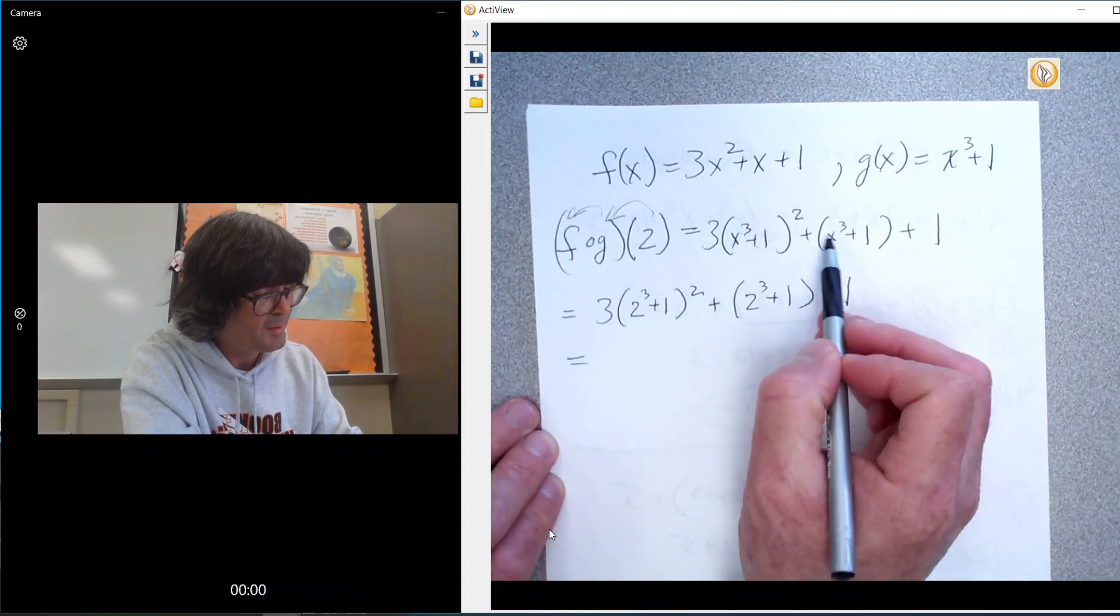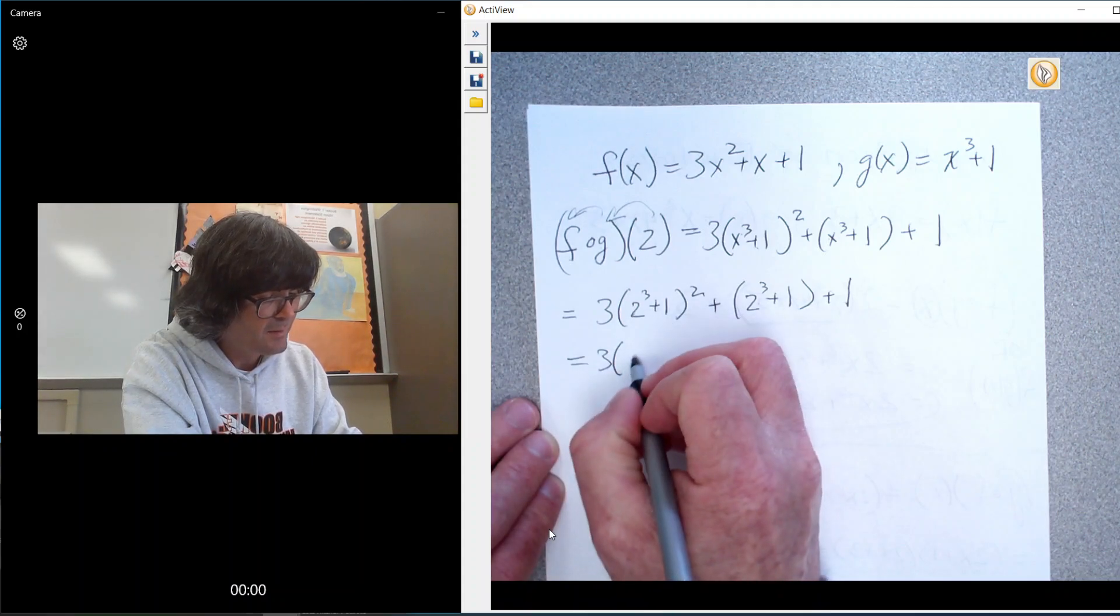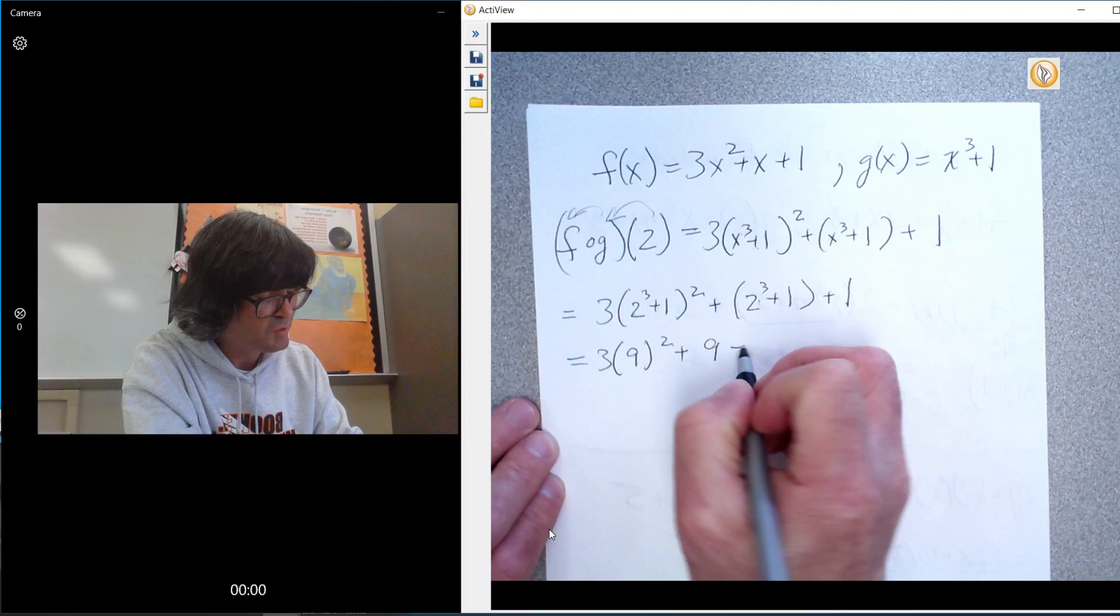So I just put a 2 everywhere there used to be an x and we get 3 times. That's 2 cubed is 8 plus 1 makes 9 squared. 8 plus 1 is 9 plus 1.